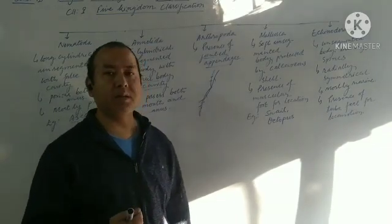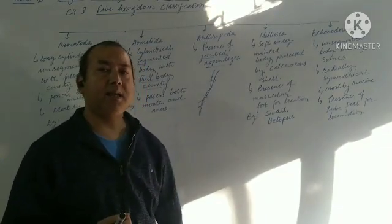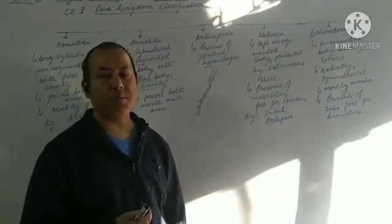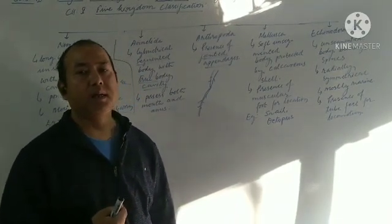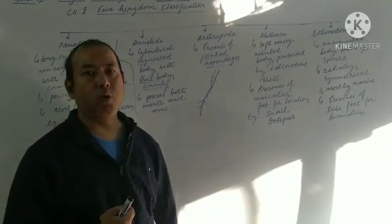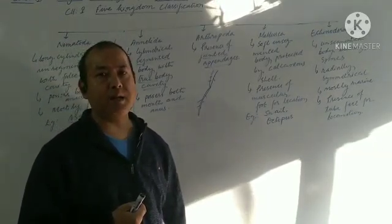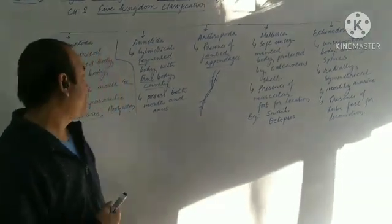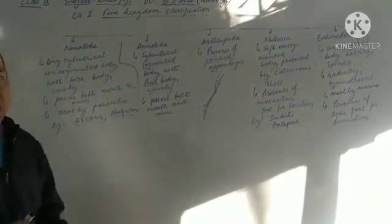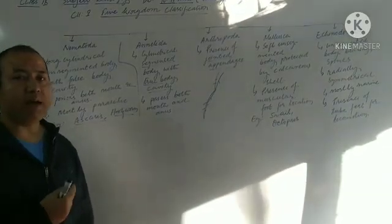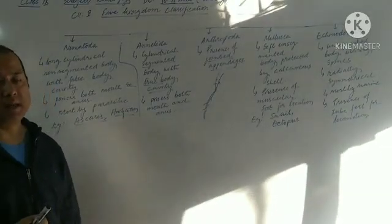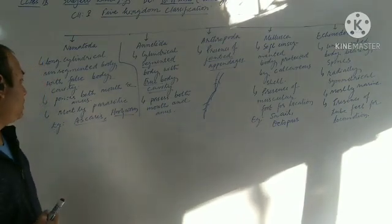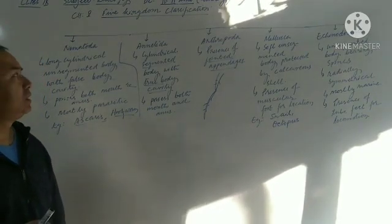And then, the next difference, we see that the flatworms with a single opening called the mouth. But here, Nematoda, there will be two openings, they are alimentary canal bears, two openings, mouth as well as anus. Mouth as well as anus. And, like flatworms, they are also mostly parasitic. The best example which you require to remember is Ascaris and Hookworms.